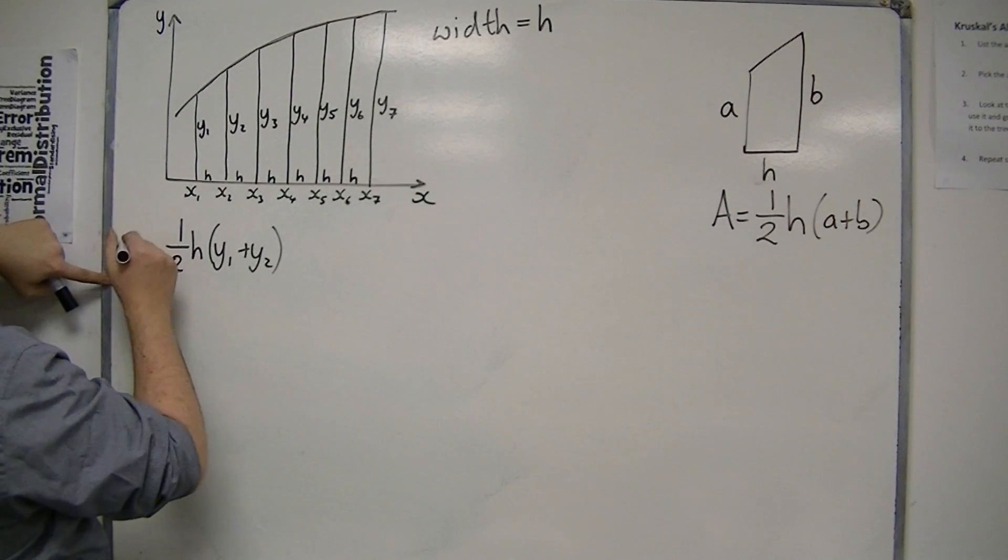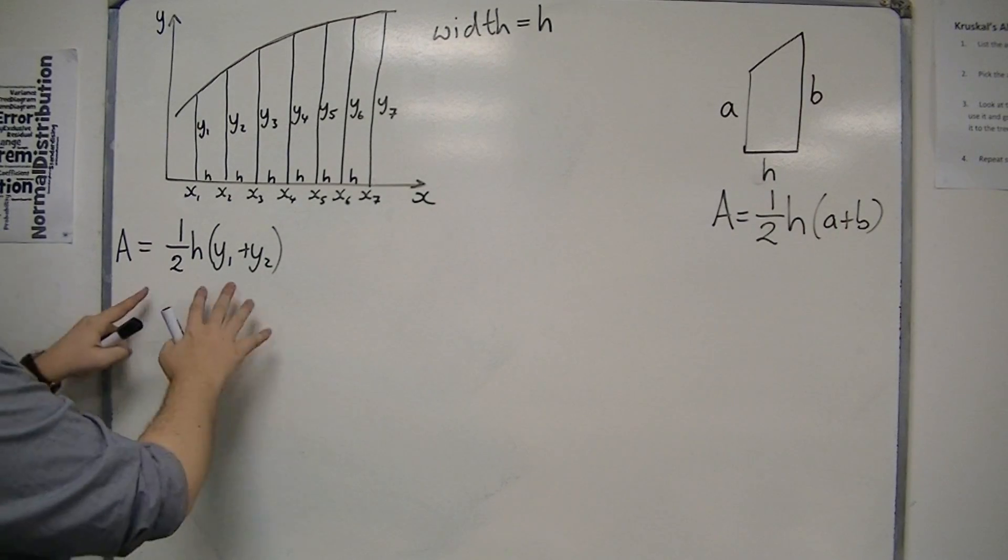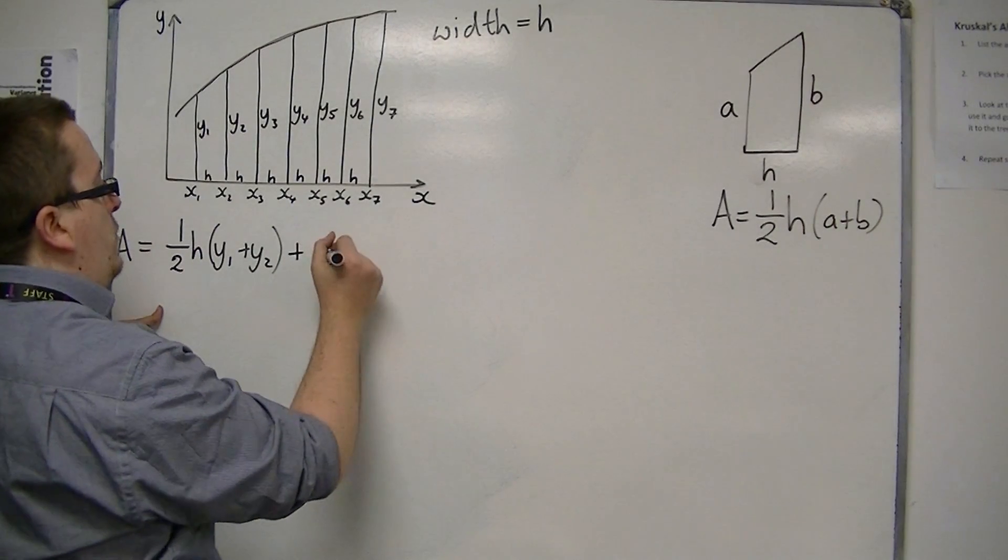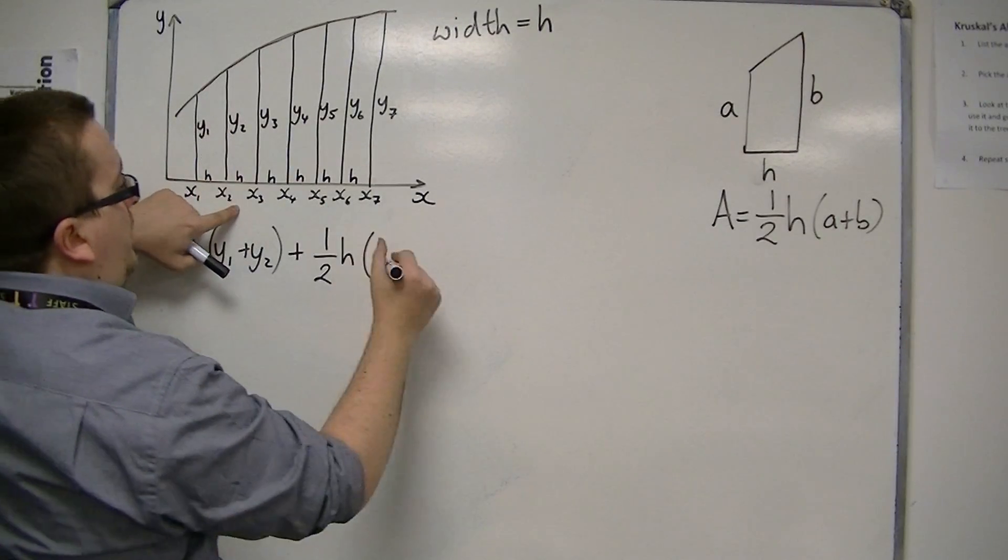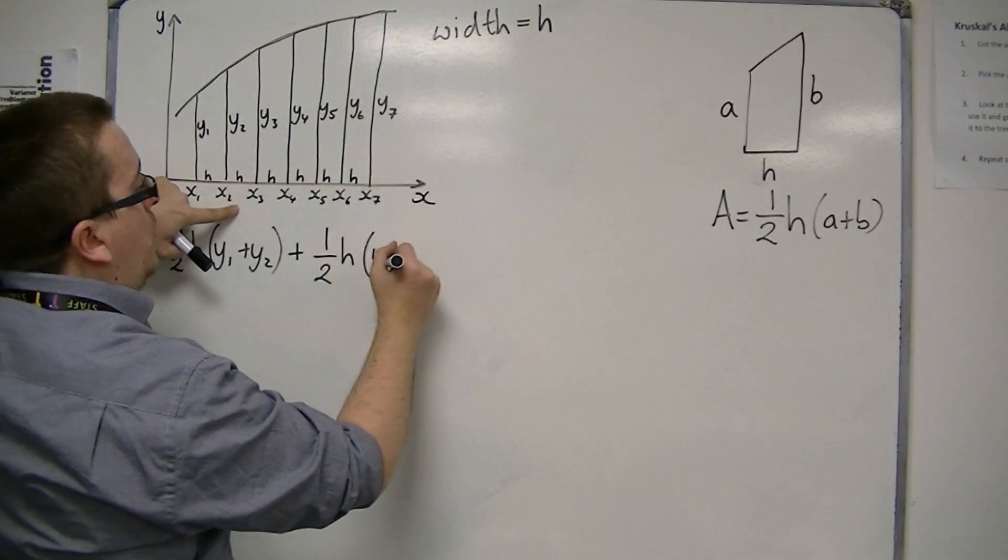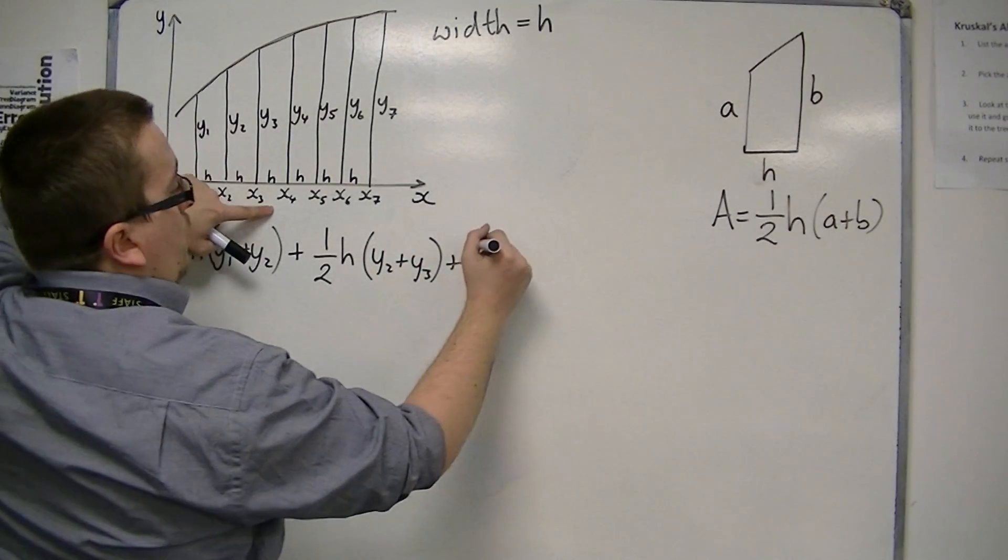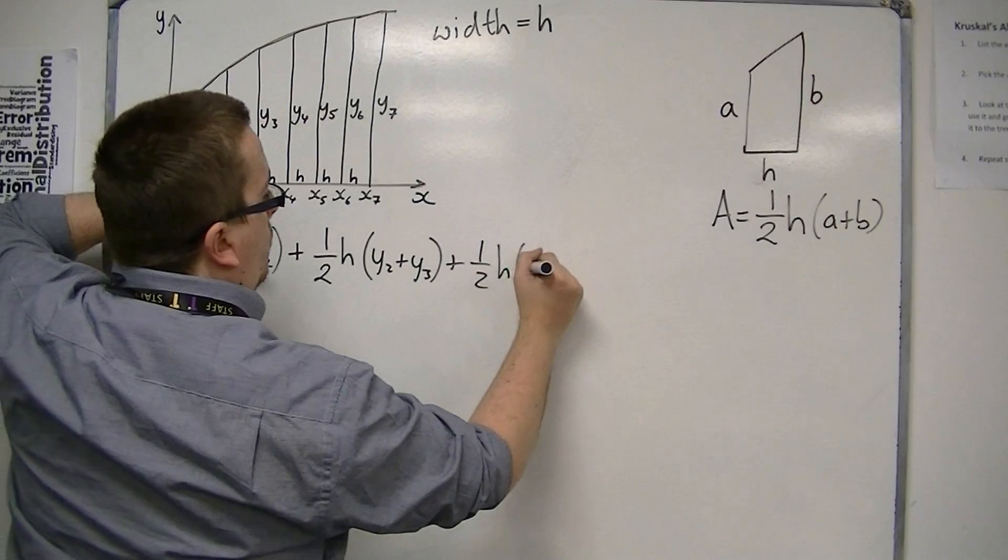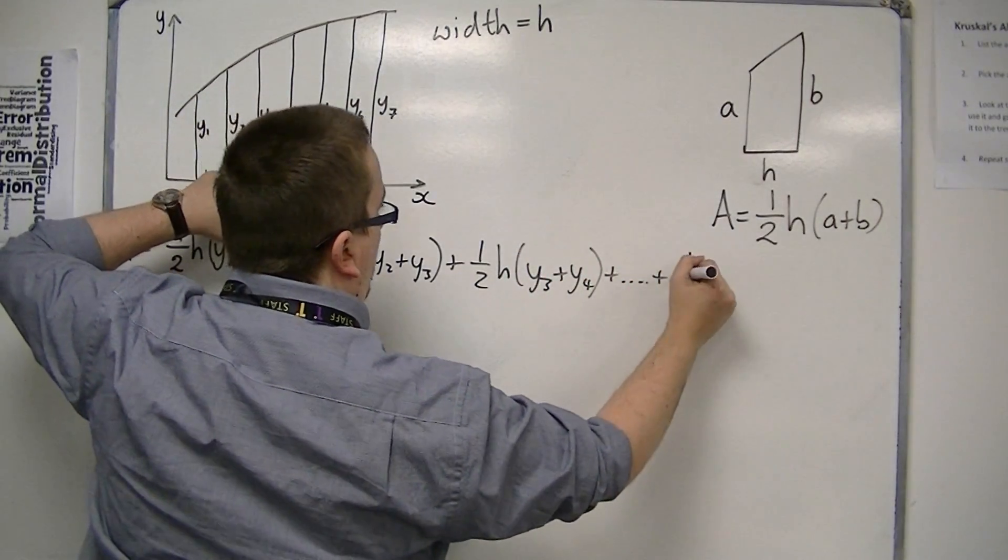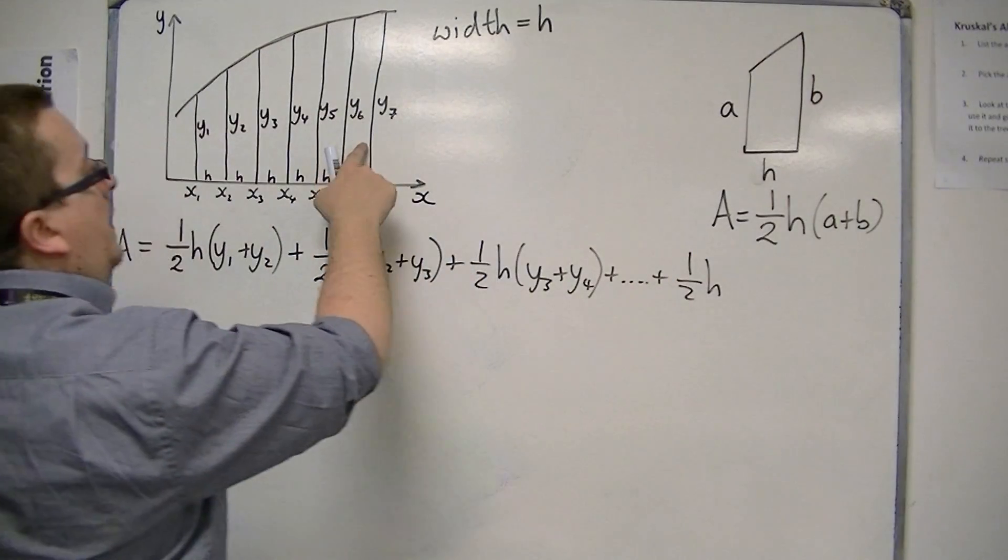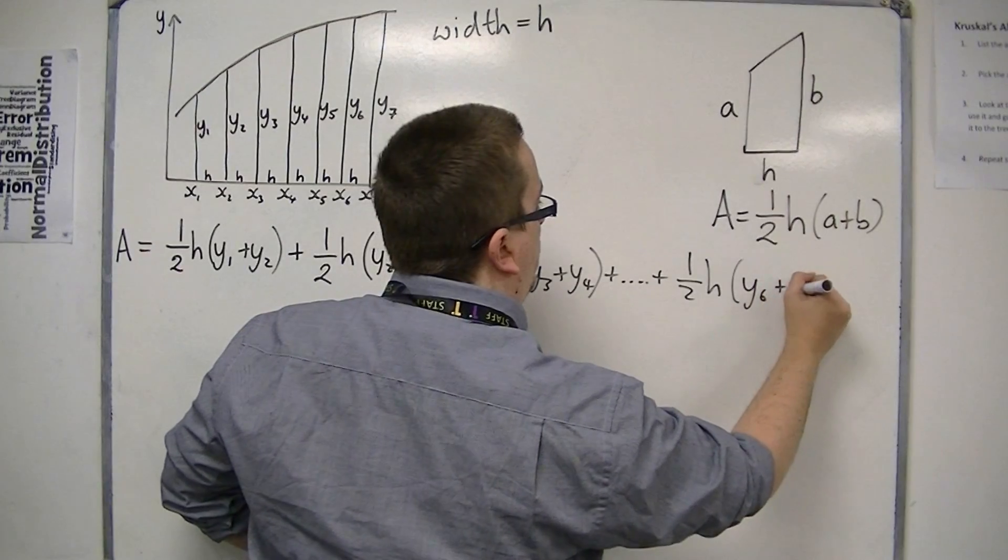So I can work out the area of the total shape by adding together a series of trapeziums. So the second trapezium will have one-half h times y2 plus y3, then the third one will be one-half h times y3 plus y4, and so on, until I reach the very last one, which will be one-half h times y6 plus y7.